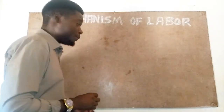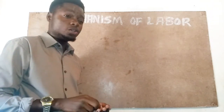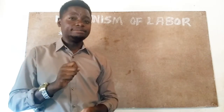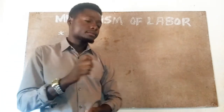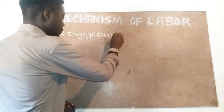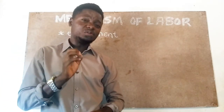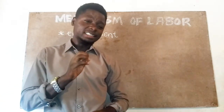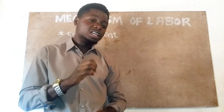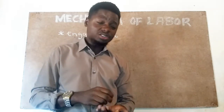Now, what are the cardinal movements we are talking about when dealing with the mechanism of labor? We have about five cardinal movements that are undertaken by the fetus as it undergoes the process of delivery. The first one is engagement. Engagement is when the largest diameter of the fetal head fits through the largest diameter of the pelvic brim. As the fetus engages, it moves into either the left or right occipital transverse position to adapt optimally to the largest diameter of the pelvic brim, resulting in descent.